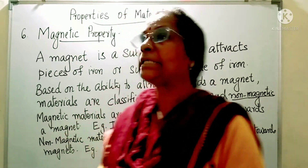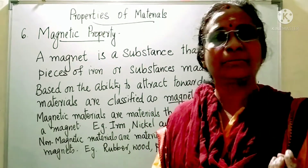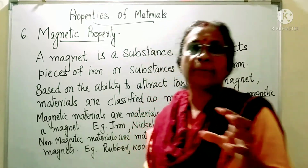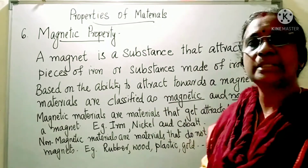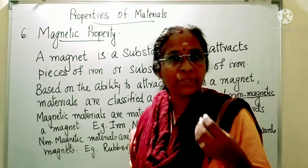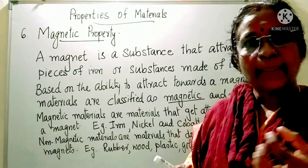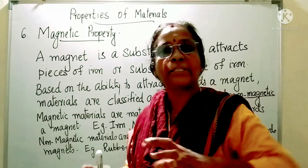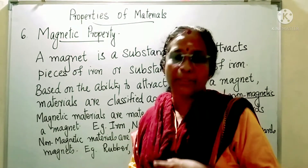Today's first property is magnetic property. What is a magnet? A magnet is a substance that attracts iron, or objects which are made up of iron, or some other metals like nickel and cobalt. They get attracted towards the magnet. So, a magnet is a special substance which attracts mostly iron towards it.